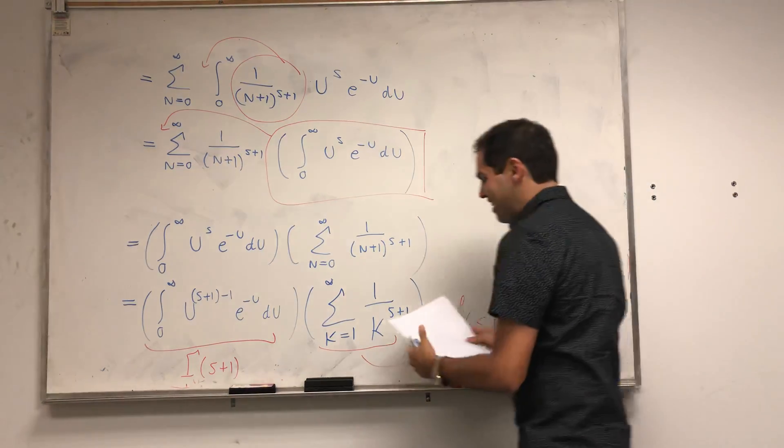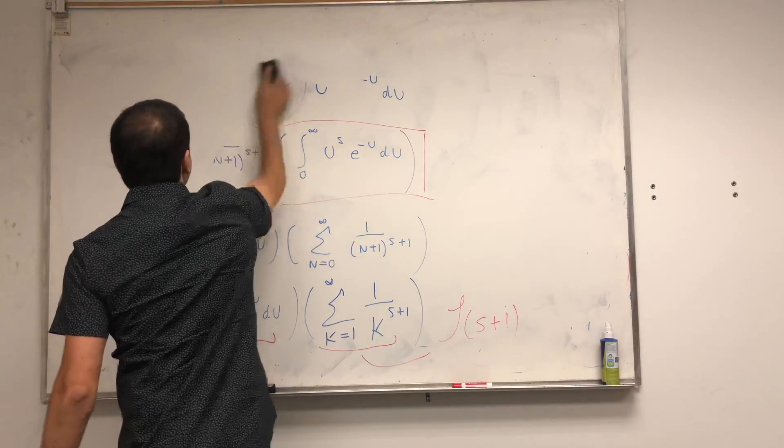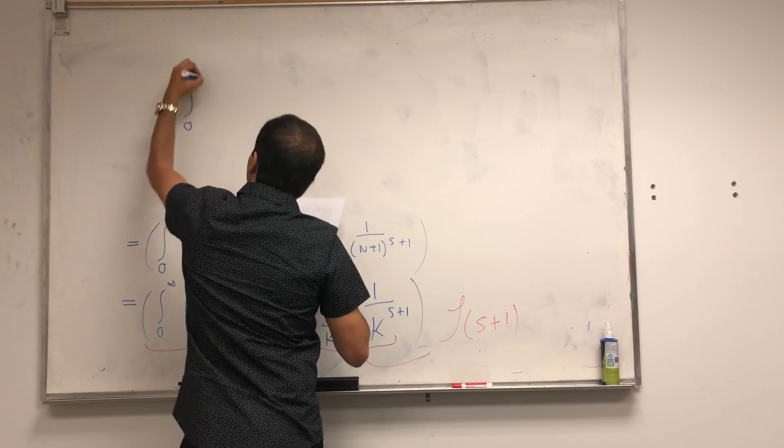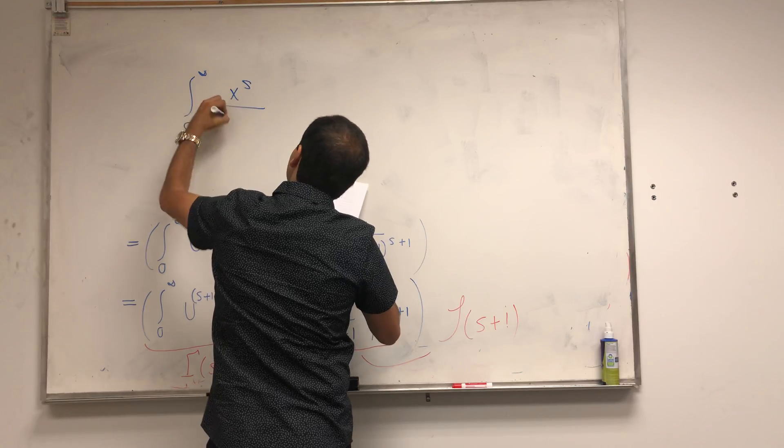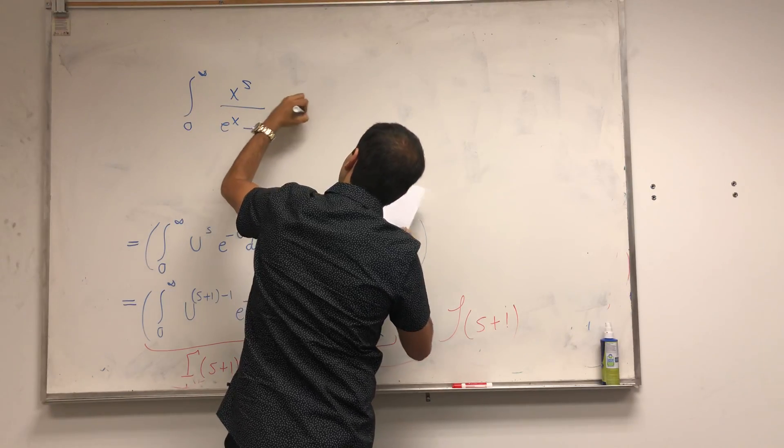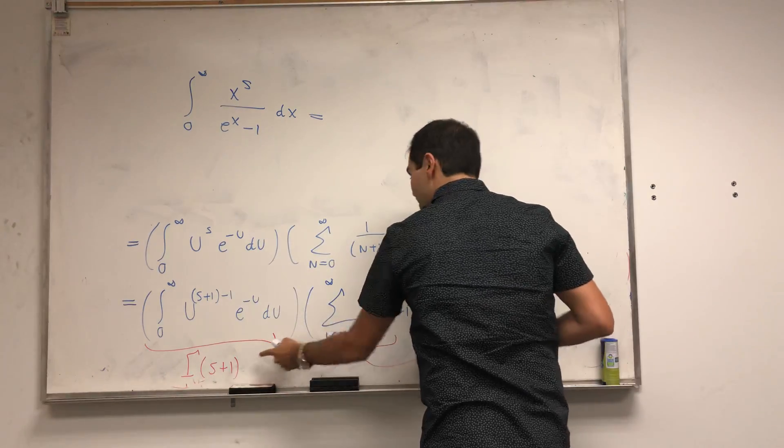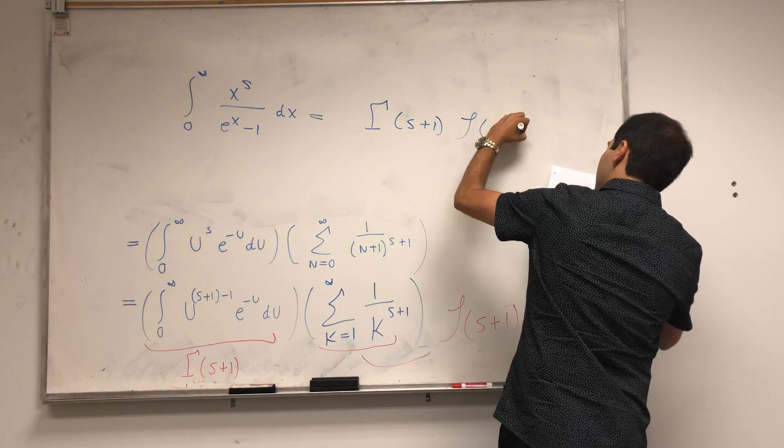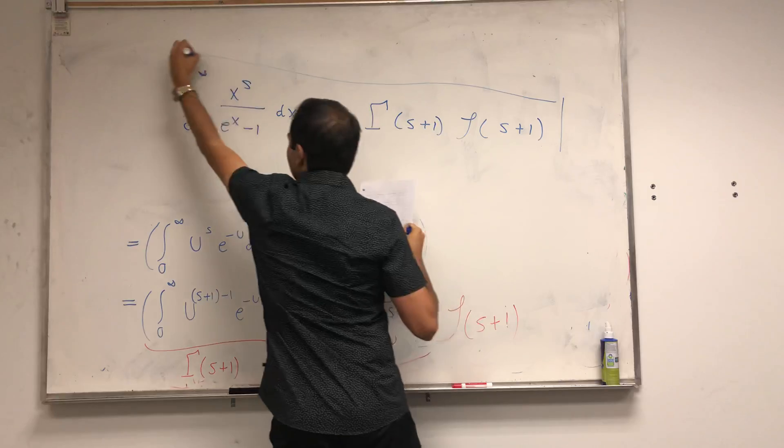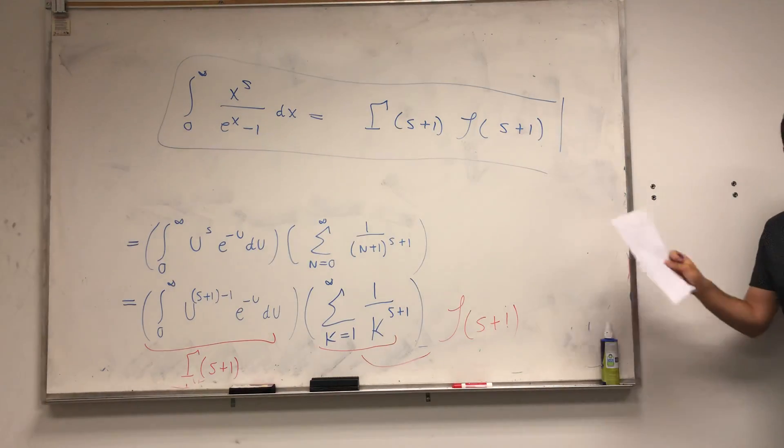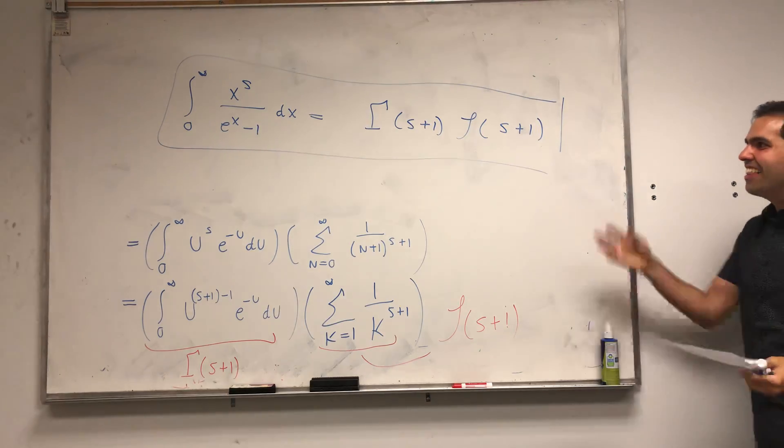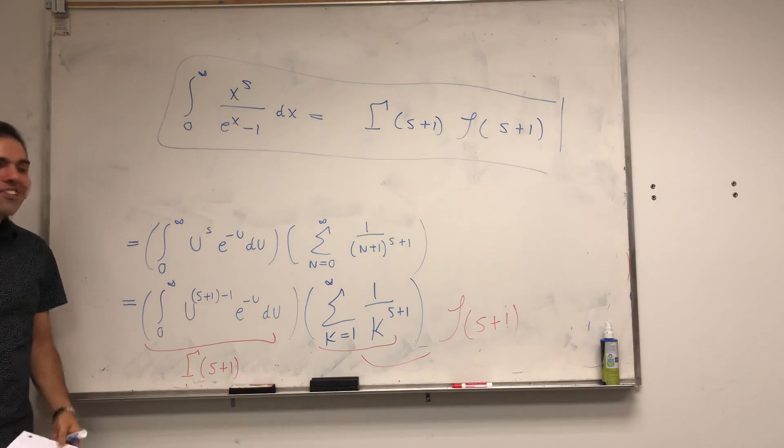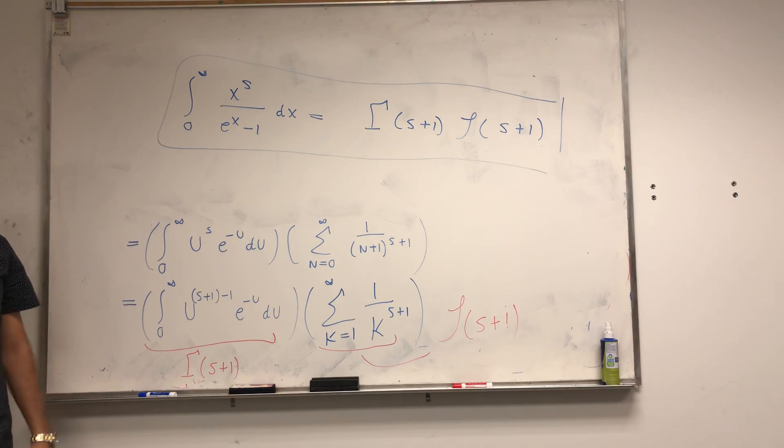And so, what did we find at the end? Again, unfortunately, we didn't really evaluate the integral, but we still found a neat result. Integral from 0 to infinity, x to the s over e to the x minus 1 dx. What we found, this integral is just equal to the product of the gamma function and the zeta function. So this integral is the product of two very important functions in math. In some sense, maybe you can say we did evaluate this, if you take the gamma and the zeta function as given.